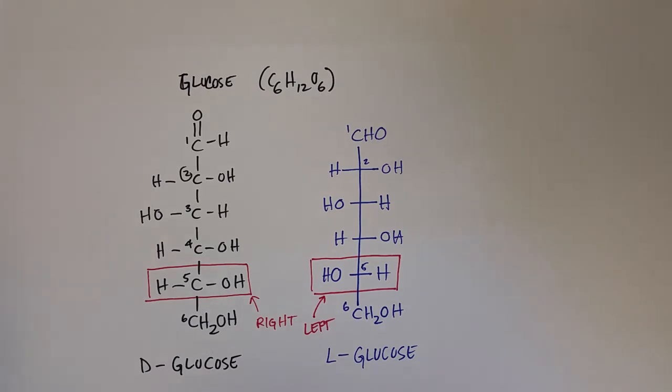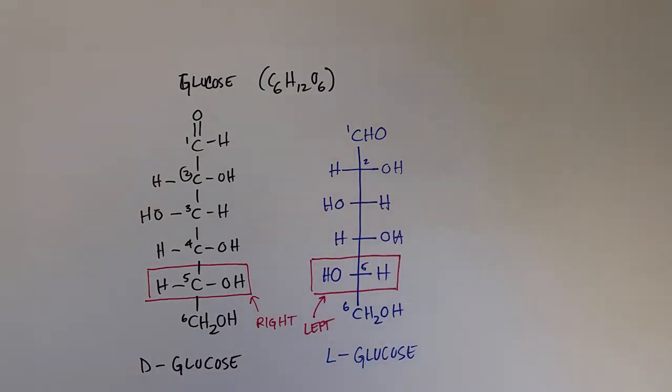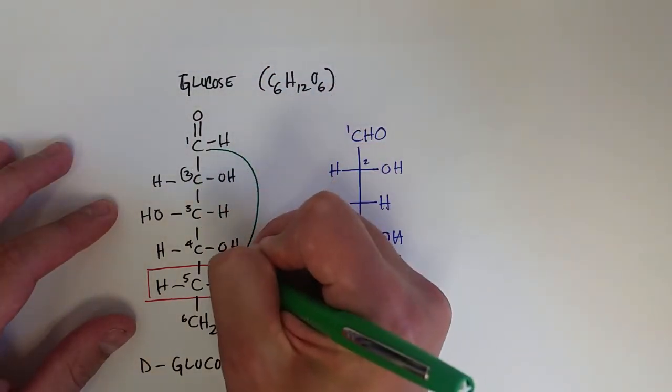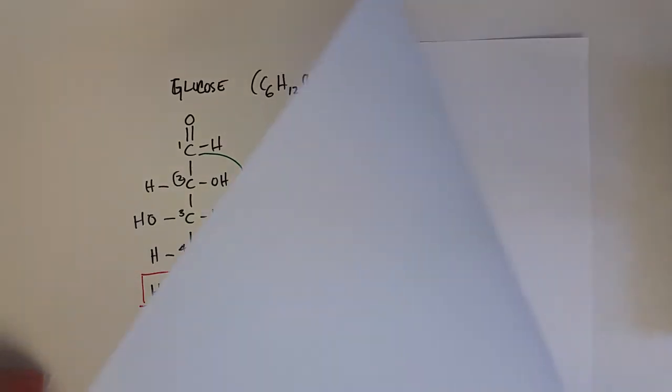As we said previously, these open chain or straight chain forms of monosaccharides isn't really how they occur in solution, in aqueous solution like in your body. The first carbon is going to form a bond with the hydroxyl group on the fifth carbon.